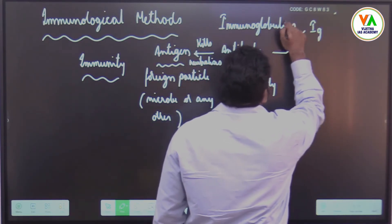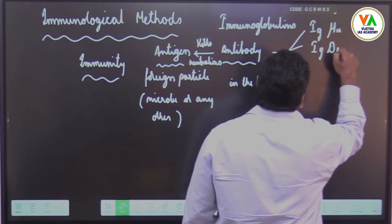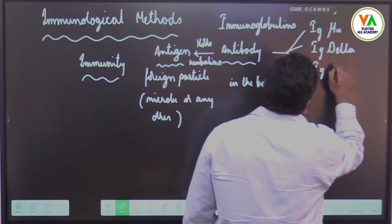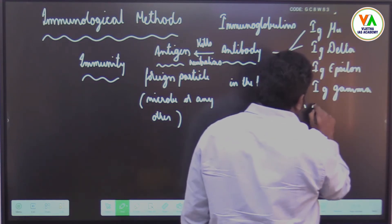These can be immunoglobulin mu or immunoglobulin delta or immunoglobulin epsilon, immunoglobulin gamma, immunoglobulin alpha.